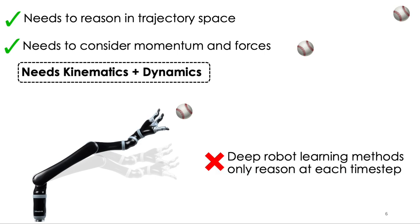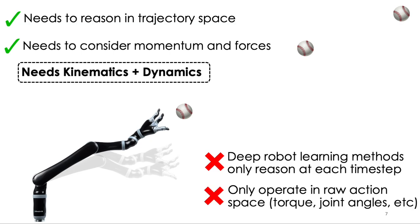In contrast, current methods in deep robot learning often output actions at each time step and do not reason in trajectory space. Furthermore, they operate in raw action spaces, outputting end-effector positions or torques at each time step. This is probably fine for quasi-static tasks like planar pushing, but not for tasks that involve more complex dynamics, such as catching.